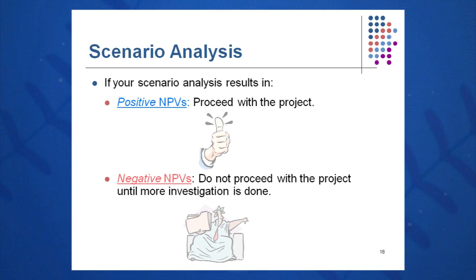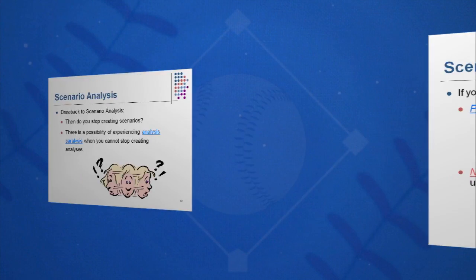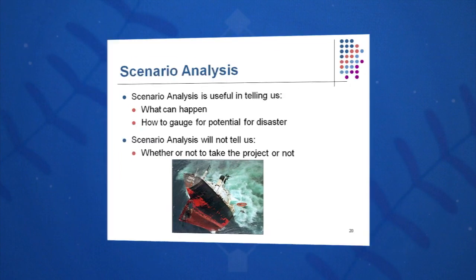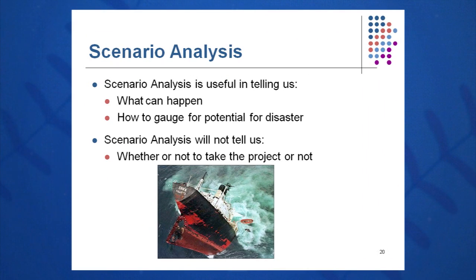If we have a positive NPV, as we said in session 9, we proceed with the project. If we have a negative NPV, we halt the project right at that point — going back to change the numbers at that point is dangerous. Don't do too many scenarios; you can get into analysis paralysis. Scenario analysis can tell us what can happen and gauge potential for disaster, but it will not tell you whether or not to take the project. That is a decision you have to make for yourself.